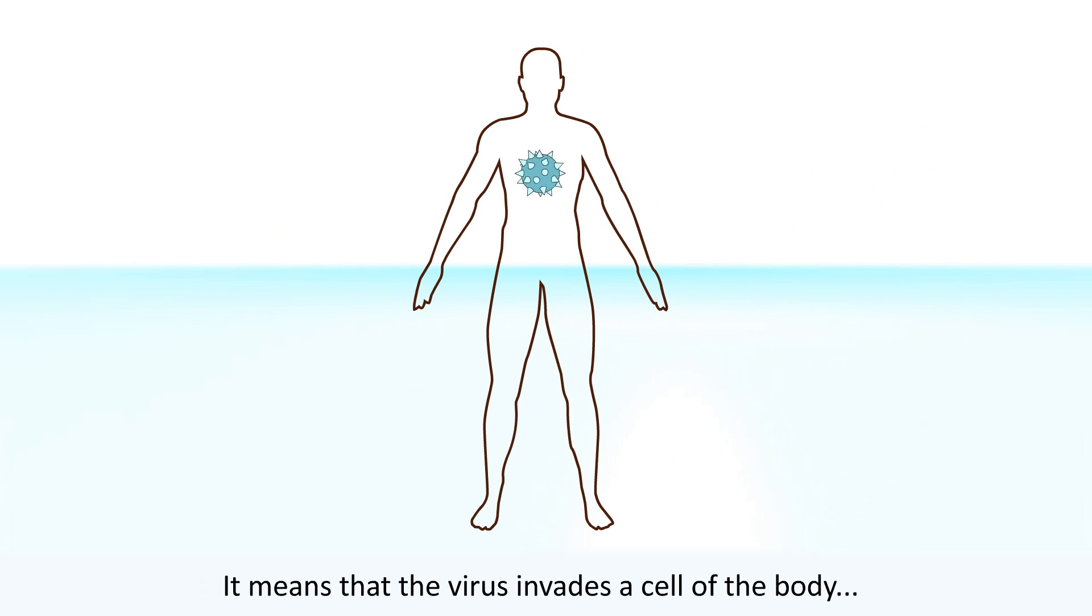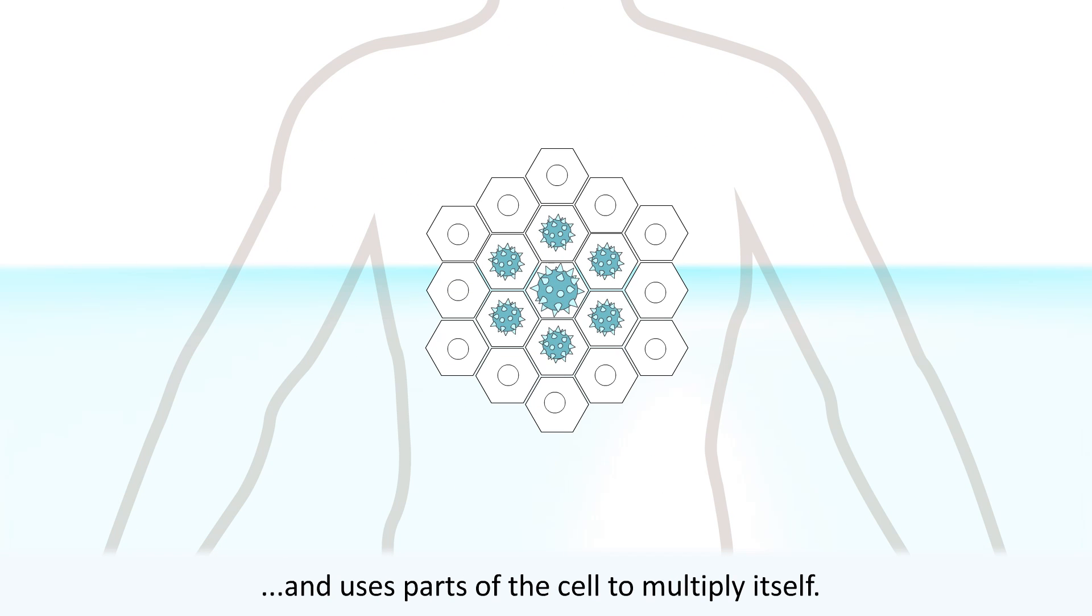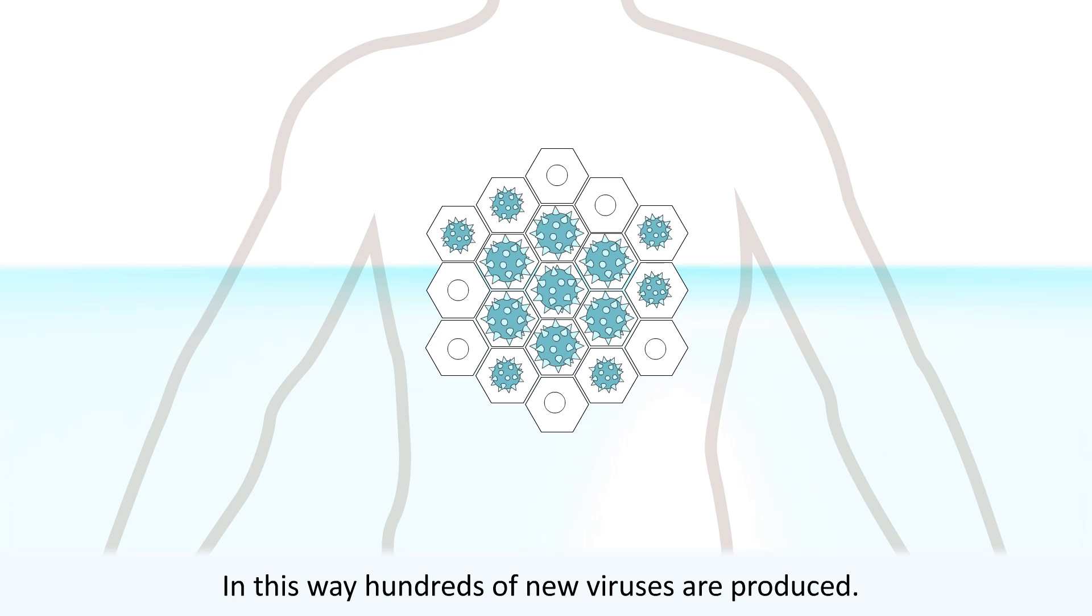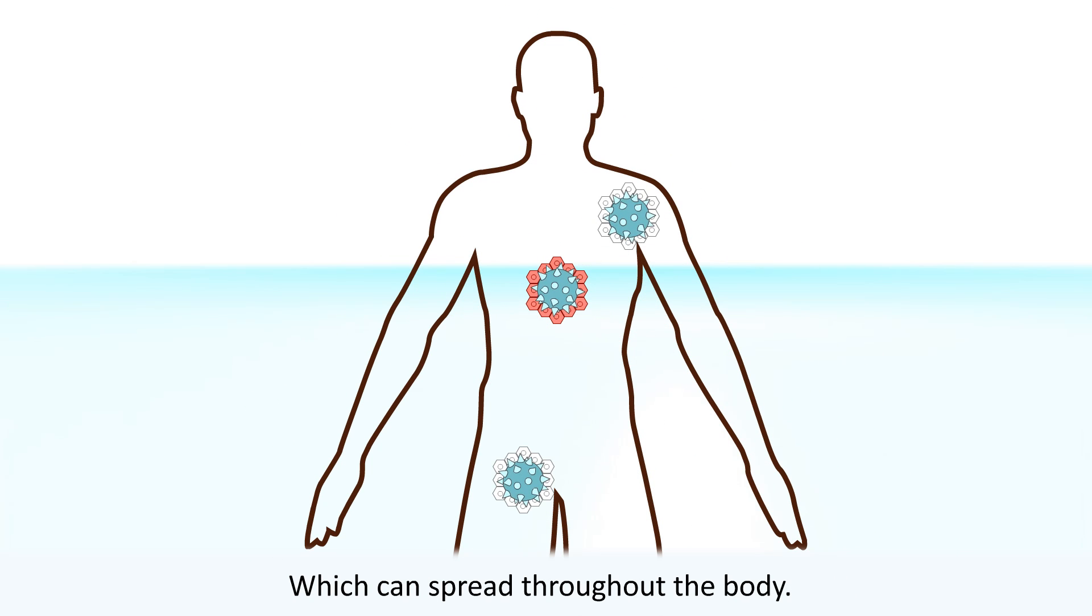It means that the virus invades a cell of the body and uses parts of the cell to multiply itself. In this way hundreds of new viruses are produced which can spread throughout the body. They can also infect new organisms.